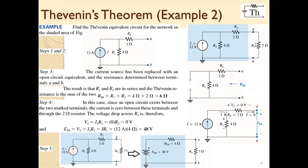What was our first step? Remove the external part. Step two: name the two terminals. So we removed RL, which was the external part, and named the two terminals. Step three: calculate the resistance between A and B. If there is any current source, replace it by an open circuit; if there is any voltage source, replace it by a short circuit. Here we have a current source, so we replace it by an open circuit. From A to B, there are two resistors in series, so RTH = 4 + 2 = 6 ohm.